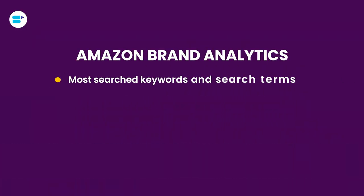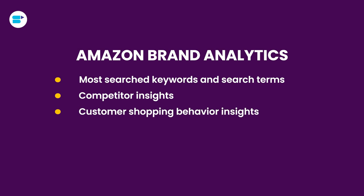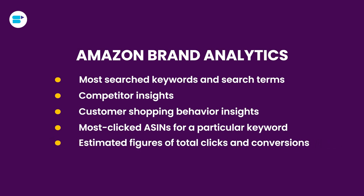The first data point is keywords and search terms that customers most search for. Second is competitor insights. Third is customer shopping behavior insights. Then comes the most clicked ASINs for a particular keyword, and lastly the estimated figures of total clicks and conversions for each of these keywords. As a cherry on top, it will let you know which of your keywords are converting very well so you can add those to your PPC campaigns.